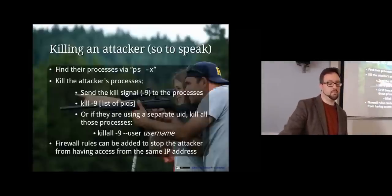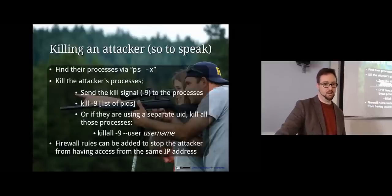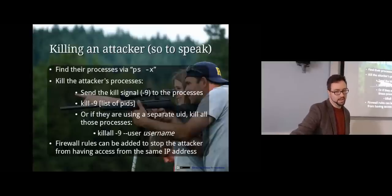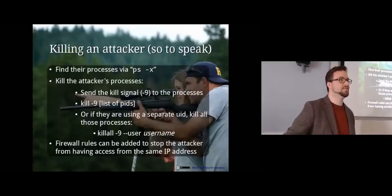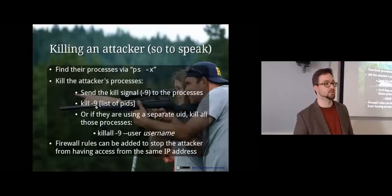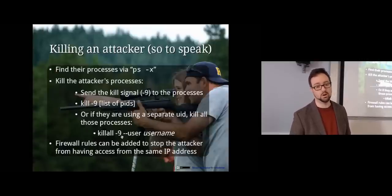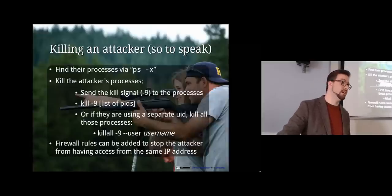If you can see a process that is the attacker, you might want to kill that process. You can run ps -x to see a list of all processes, list by user ID, and kill off processes. On a UNIX system there are signals you can send to programs — kill -9 means to actually terminate the process without waiting for it to respond. You can do kill -9 followed by a list of PIDs, or killall -9 --user and a username to kill all processes that user is running.